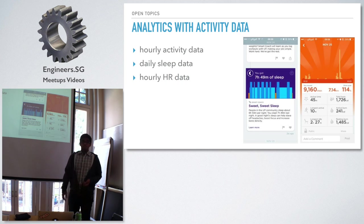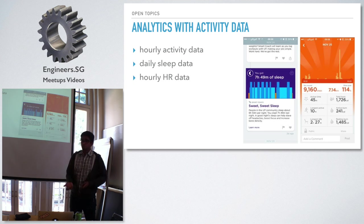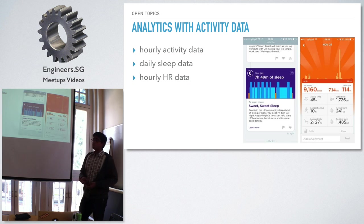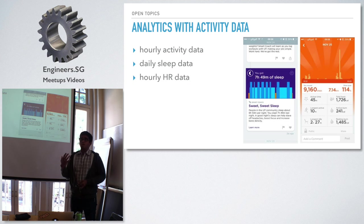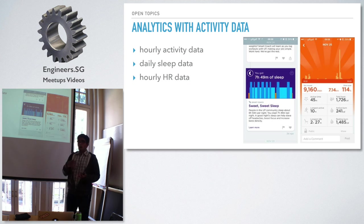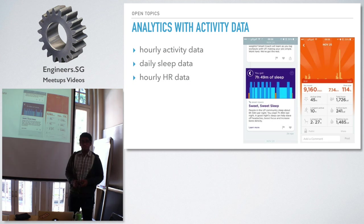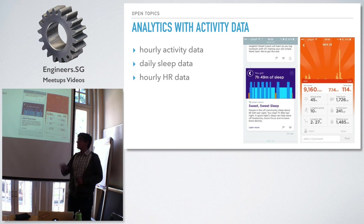One project idea is analytics with activity data. Almost everyone here has a fitness tracker, and it gives you a lot of data — when you sleep, when you wake up, how many steps you took, how active you were. But what if you could get more information? For example, are you a morning person or a night person? What is your optimal sleep amount for your most active day? How do steps and sleep affect your happiness level? There are so many things not tackled by current systems, and all this data is already available.